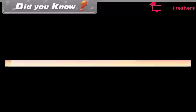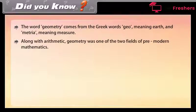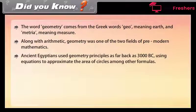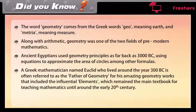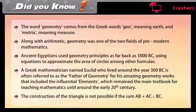Did you know? The word geometry comes from the Greek words 'geo' meaning earth and 'metria' meaning measure. Along with arithmetic, geometry was one of the two fields of pre-modern mathematics. Ancient Egyptians used geometry principles as far back as 3000 BC, using equations to approximate the area of circles among other formulas. A Greek mathematician named Euclid, who lived around 300 BC, is often referred to as the father of geometry for his influential work called 'Elements', which remained the main textbook for teaching mathematics until around the early 20th century. Note: the construction of a triangle is not possible if AB plus AC is less than or equal to BC.